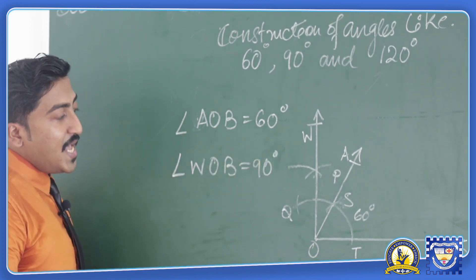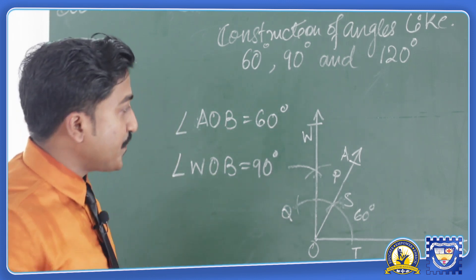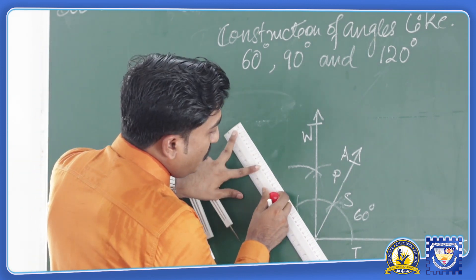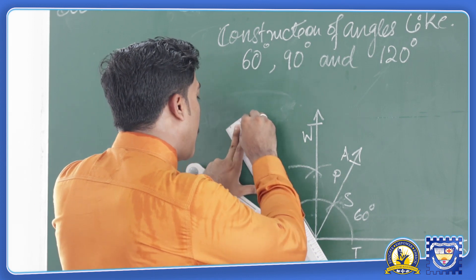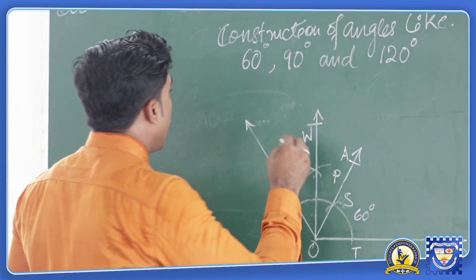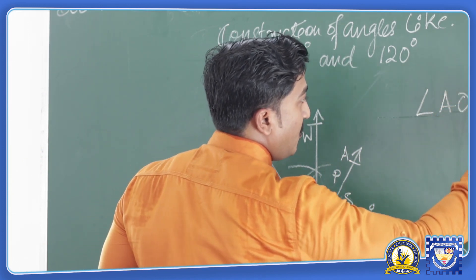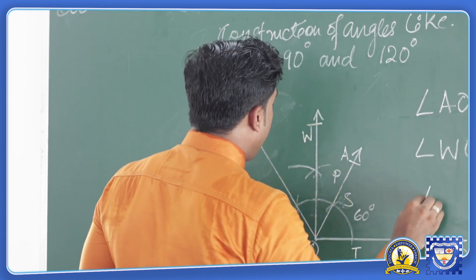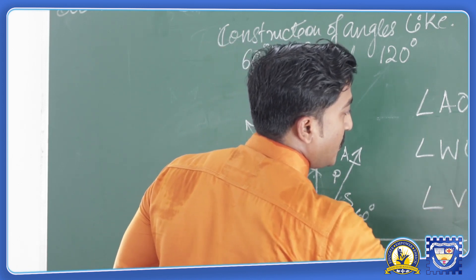Proceeding forward with another angle of 120 degrees. Since we have already constructed the angle over here, the previous intercept Q is already at 120 degrees. What we do is join the two points O and Q. Once we join the points O and Q we get another angle of 120 degrees. So now the measurements are: angle AOB as 60 degrees, angle WOB as 90 degrees, and angle VOB as 120 degrees.